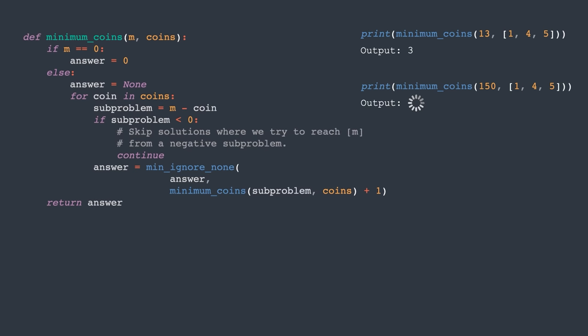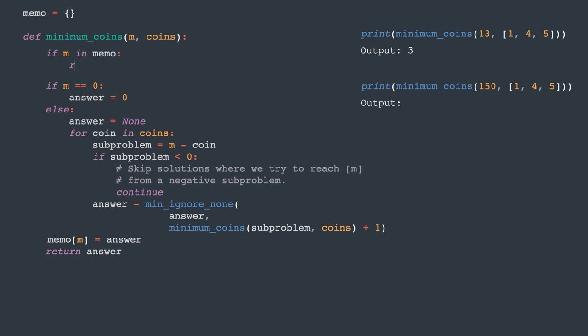Luckily, we know about memoization, so we can use this trick to speed up our solution. Let's store the computation in the memo dictionary and return it if it's already computed. This solution is much faster and returns the value 30 immediately. The reason this function is efficient is because the answer for each subproblem is calculated recursively only once. After it was computed once, it can be efficiently retrieved the next time the function is called for the same parameter. The time complexity is O of m times k where k is the number of coins and m is the target sum. This is because we iterate over each coin to find the best solution for each subproblem.